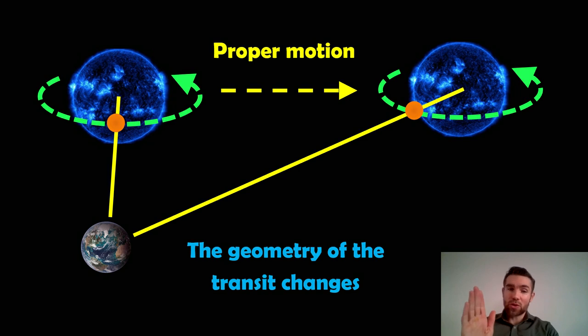So the planet goes around its orbit. It just starts to transit the star. We then start our timing. It transits, goes around. But in the meantime, the star has actually moved away.